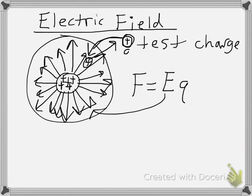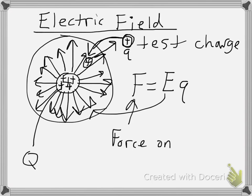The test charge has charge little q, and we give the large charge capital Q. So the force that our test charge feels is due to the electric field that the big charge produces, multiplied by the small charge on the test charge. Typically a test charge is going to be something like an individual proton — typically a test charge is positive. So this is just another way to think about how charged objects interact.